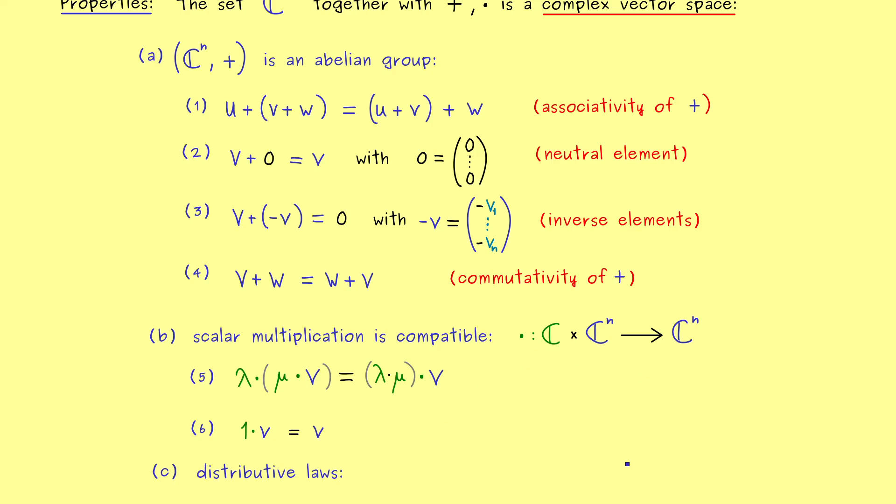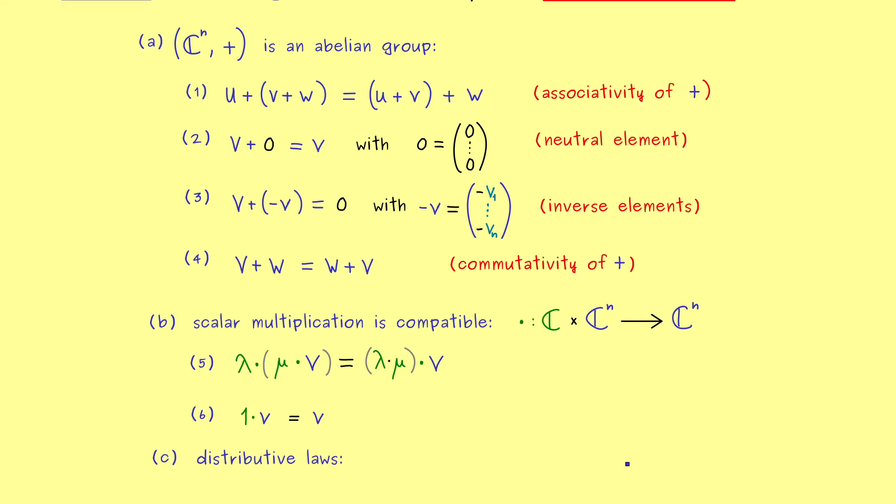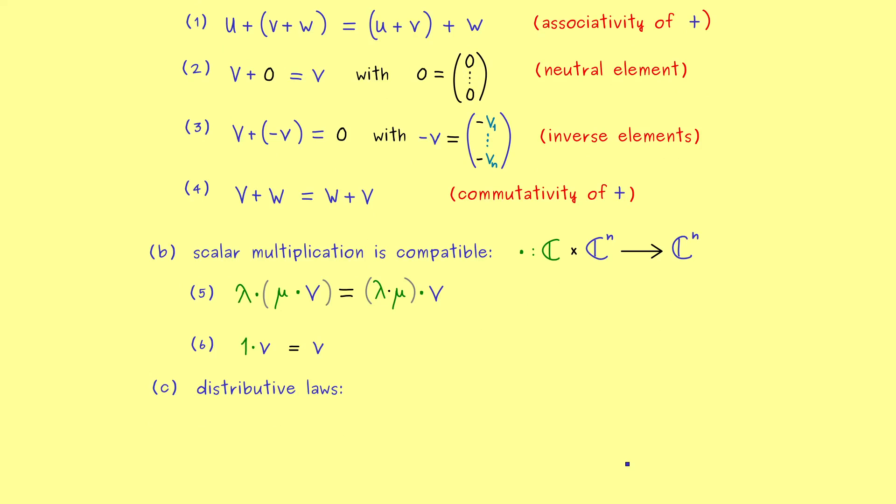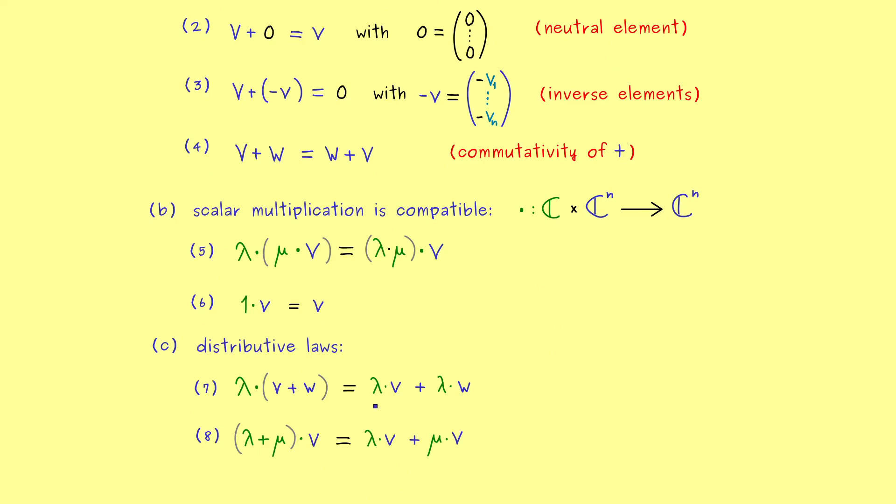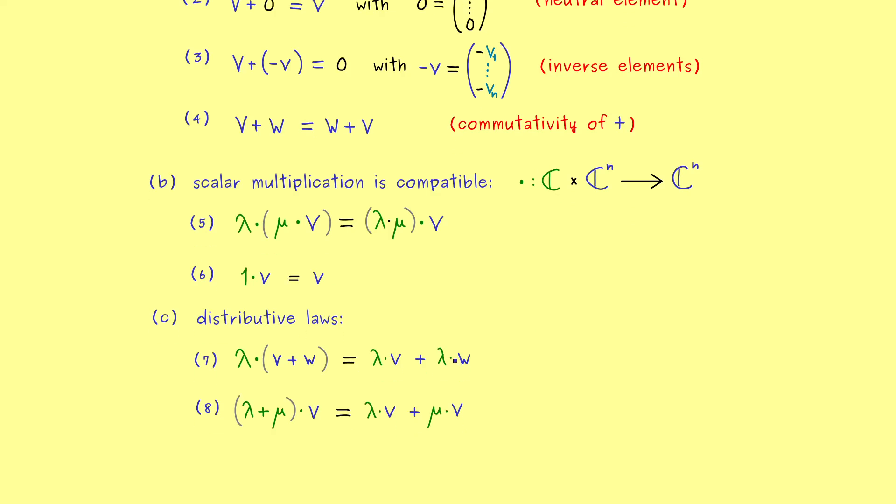Okay and then the last thing we need are distributive laws. So laws that connect both the addition and scalar multiplication. They always look the same. They just say you can multiply the scalar to two vectors. And in the same sense you can multiply a vector to two scalars. However here please keep in mind all the scalars involved are complex numbers. Okay and with that we have stated the eight rules again that define a so called vector space. And now the only difference to R^n is now that we have a scalar multiplication with complex numbers. And that's the reason we call it a complex vector space.